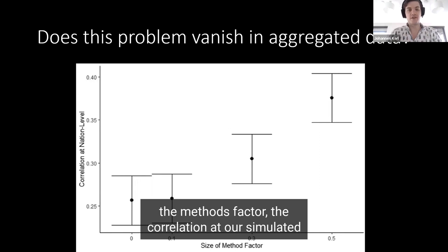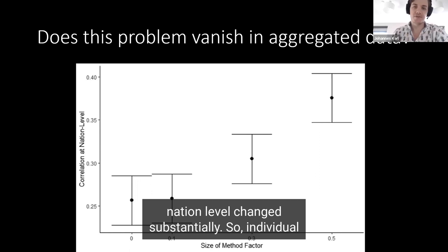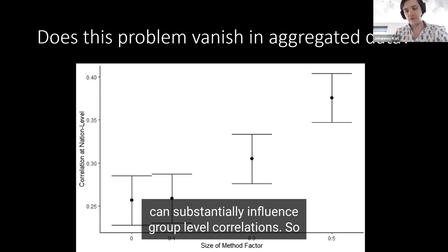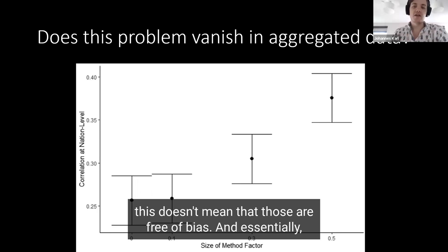What we found is that with the increasing size of the methods factor, the correlation at our simulated nation level changed substantially. So individual level non-invariance and individual level methods factors can substantially influence group level correlation. Even if you find meaningful correlations at the group level, this doesn't mean that those are free of bias.